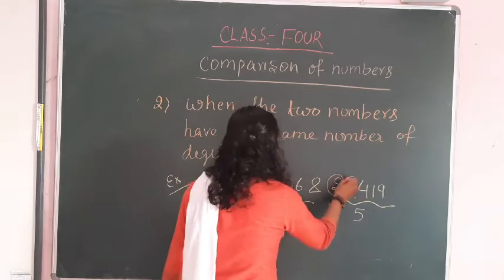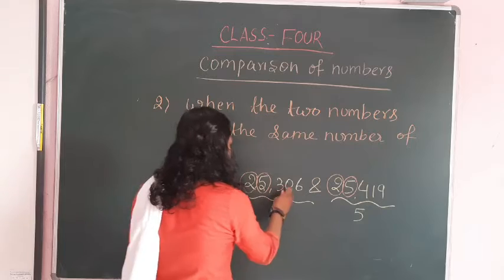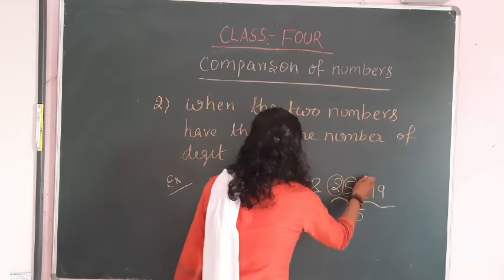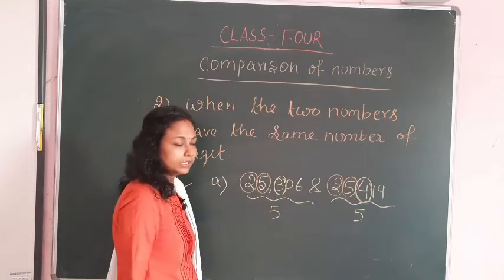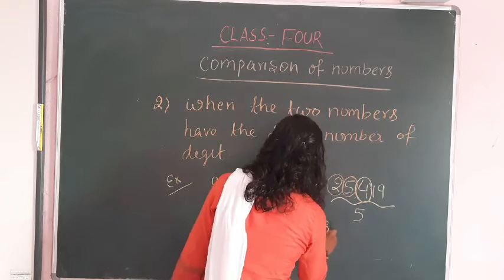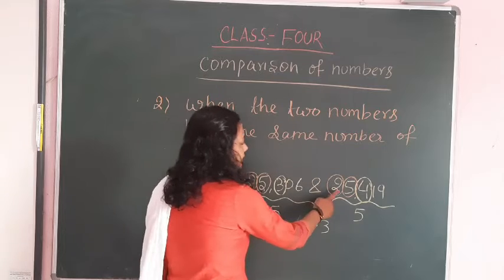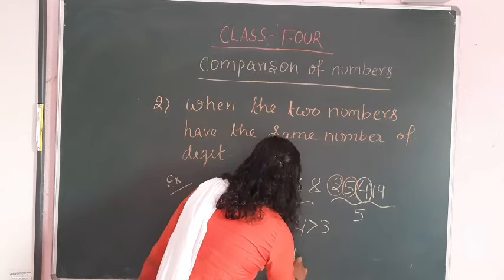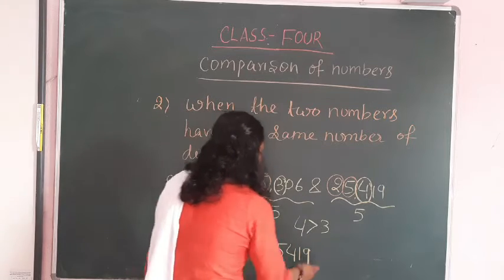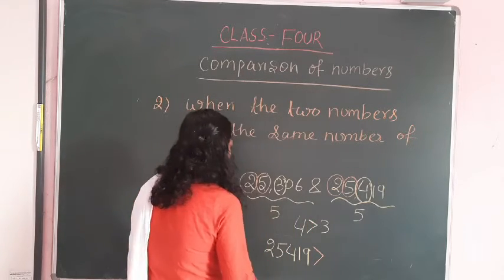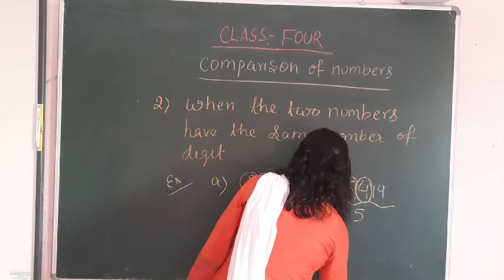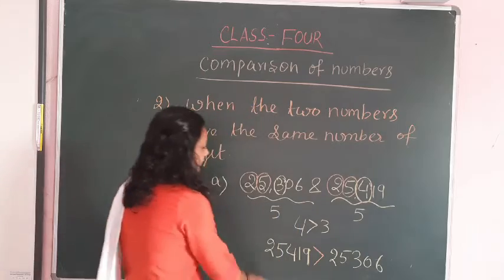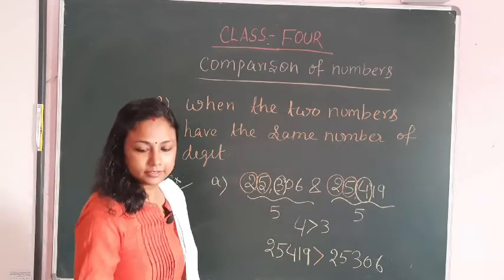Four is greater than three, so 25419 is greater than 25306. That is the appropriate answer.